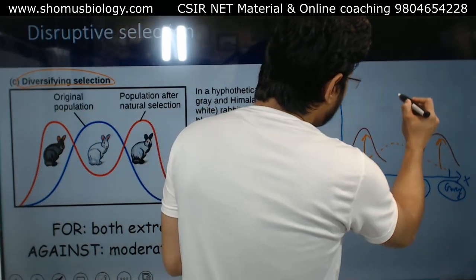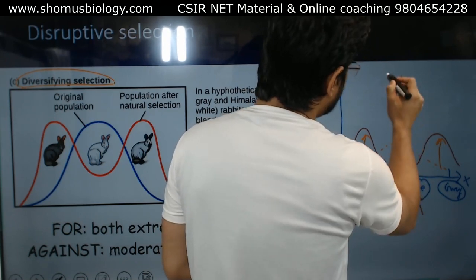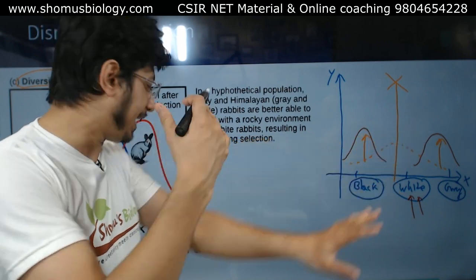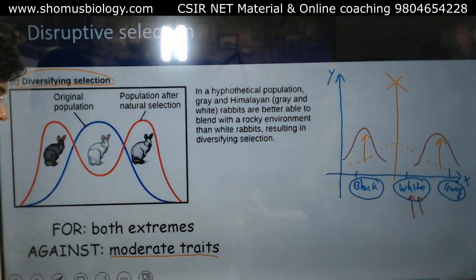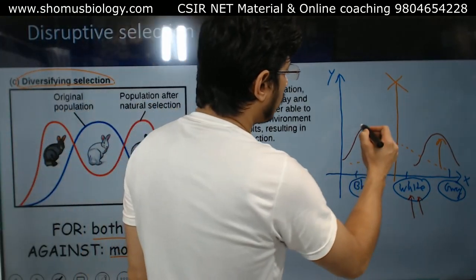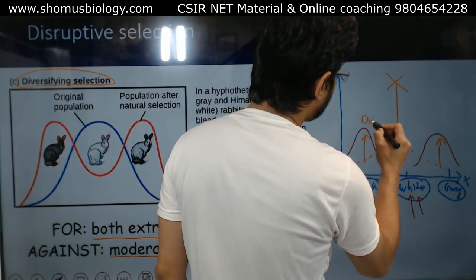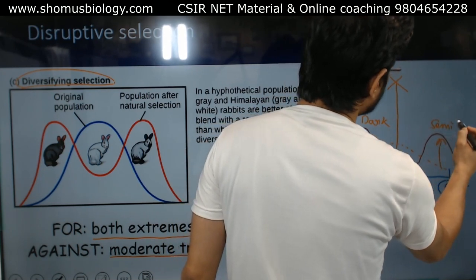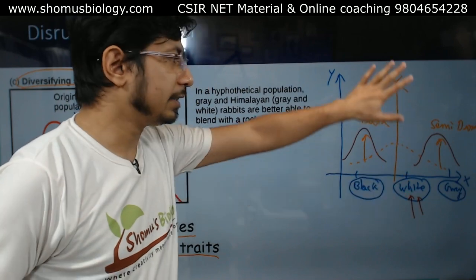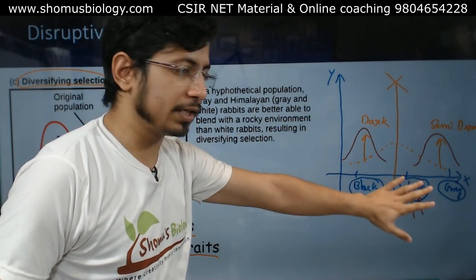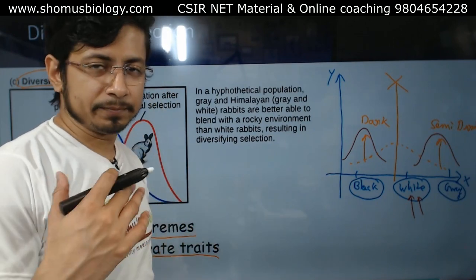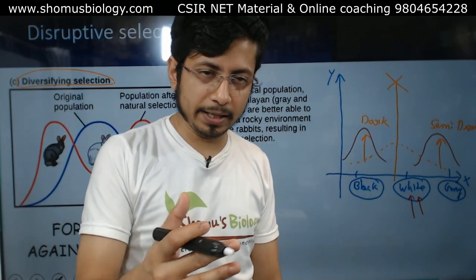Why disruptive? Because the median is not selected. Disruptive selection is against the moderate or median trait — it favors both extremities. Both the dark-colored extremity and the semi-dark extremity are selected, while the moderate character (white) is not. Another example is the squirrel.